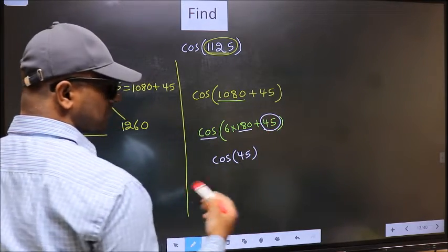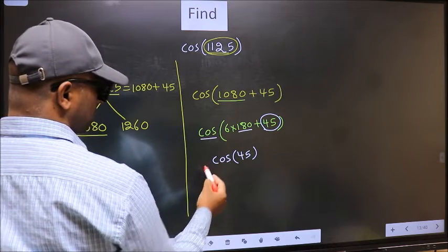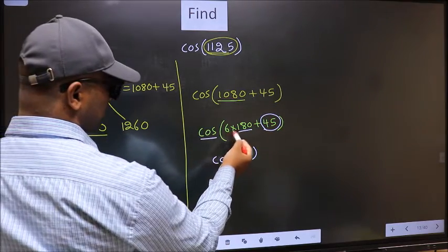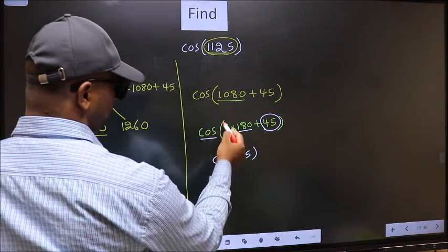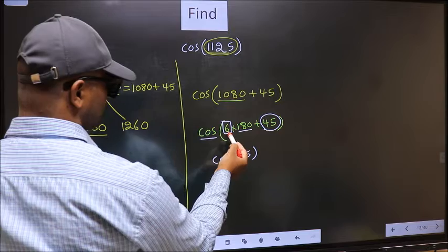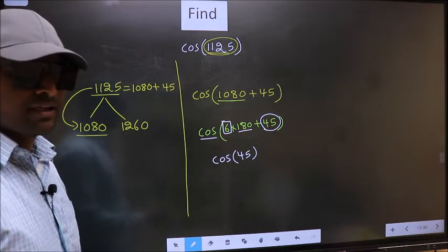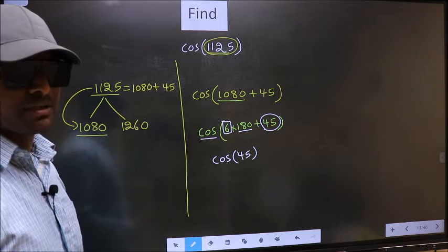Now the question is, will we get plus or minus? To answer that, we should look at the number before 180. That is 6, and 6 is even. All the even multiples of 180 lie in either the first or the fourth quadrant.